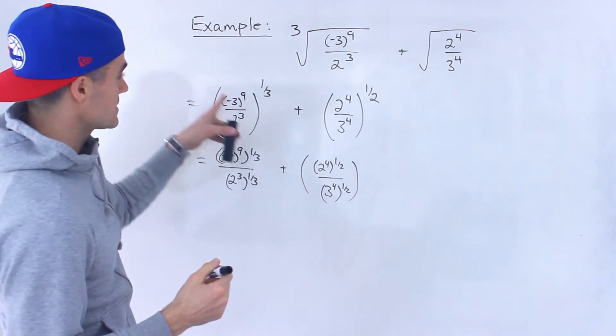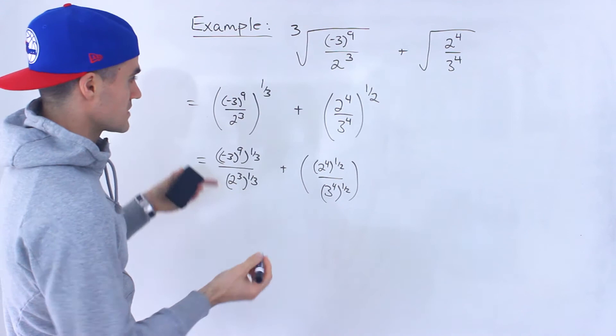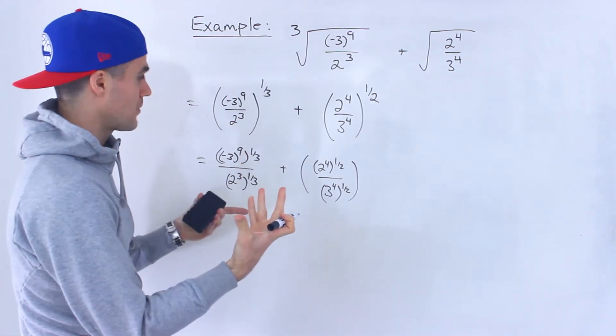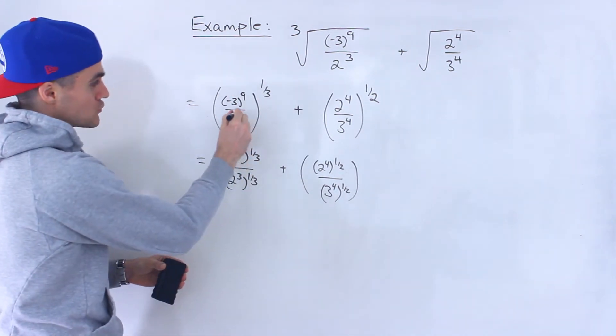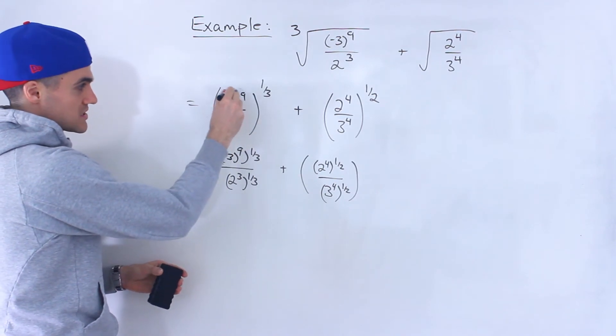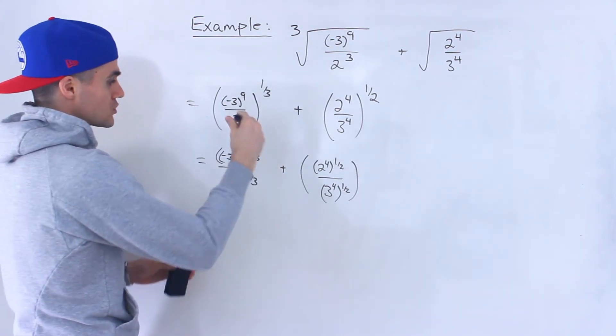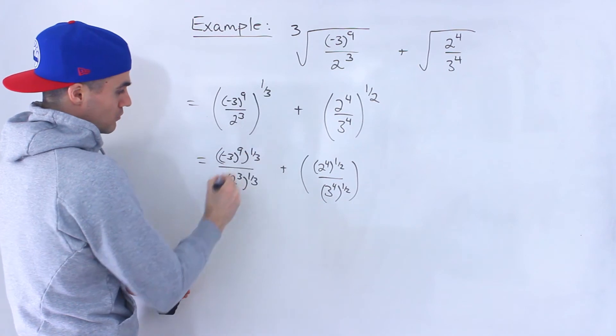But notice here, these bases are different, so we can't really simplify those with exponent laws anymore. Instead of getting the actual number for each expression, because negative 3 to the power of 9 is really large, I would first bring the 1 over 3 in.